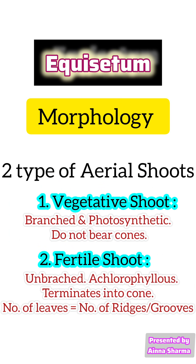Looking at the morphology of Equisetum, there are two types of aerial shoot. The first one is the vegetative shoot and the second one is the fertile shoot. The vegetative shoot is branched and photosynthetic, and it bears no cones. The fertile shoot is unbranched, lacks chlorophyll, and terminates into a cone.